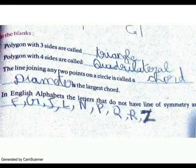Mass symmetry, fill in the blank. Polygon with three sides are called triangle. Polygon with four sides are called quadrilateral. The length drawn from a point to a point on a circle is called a chord.